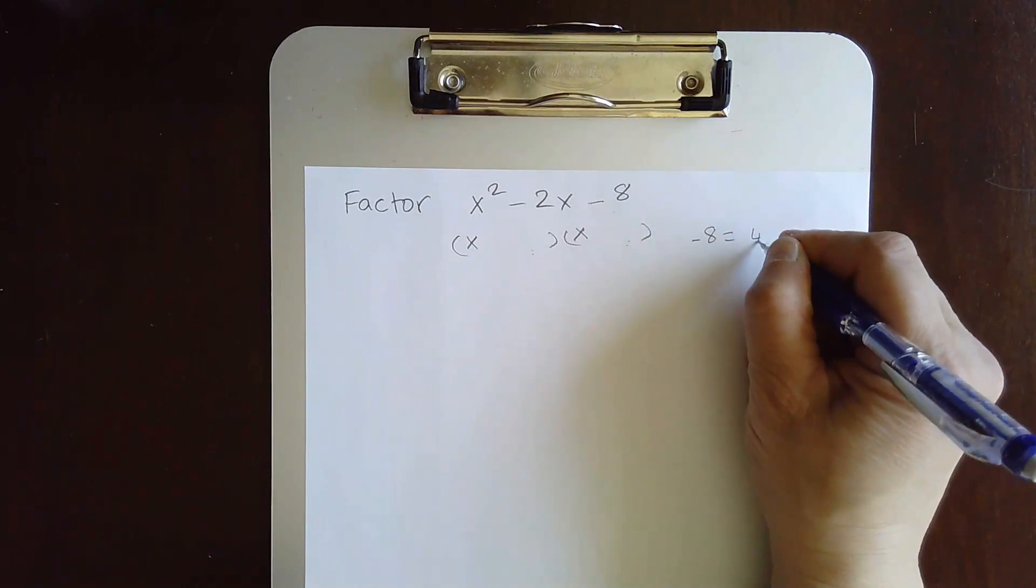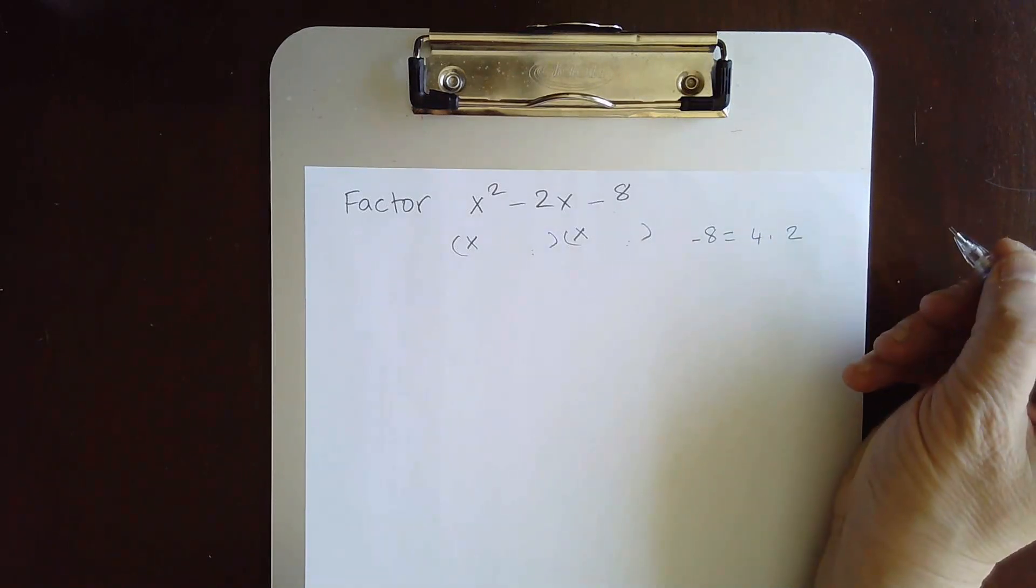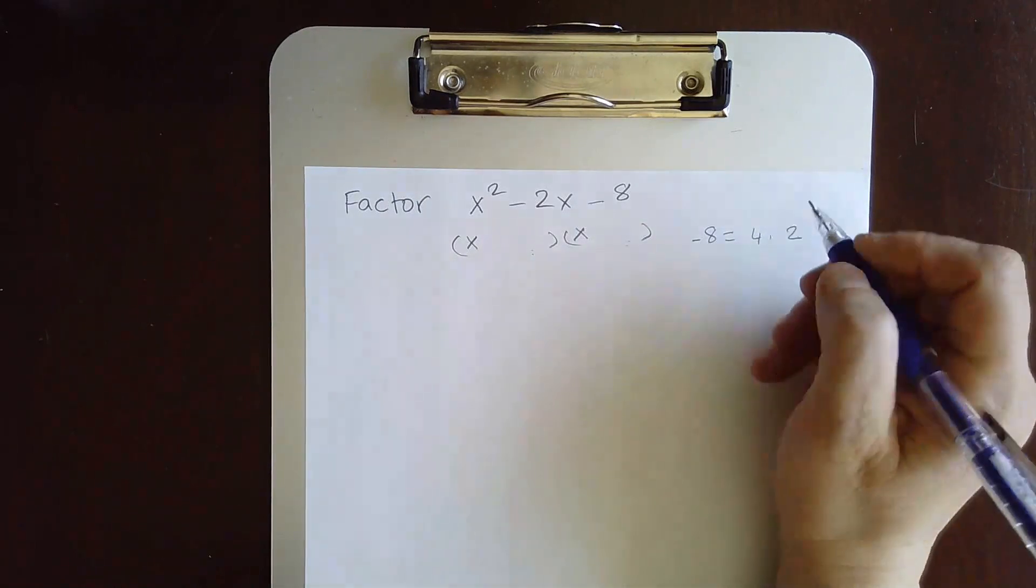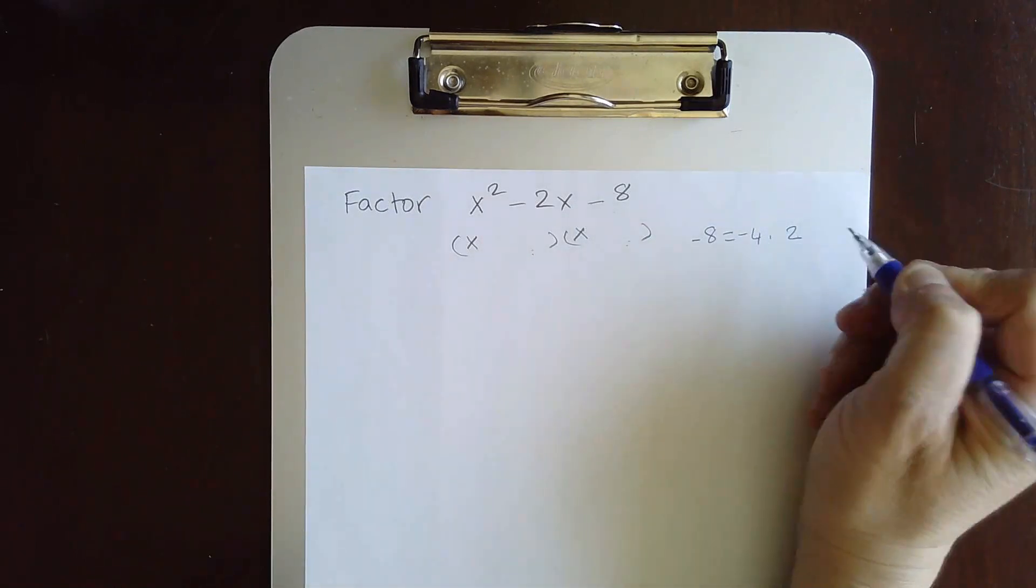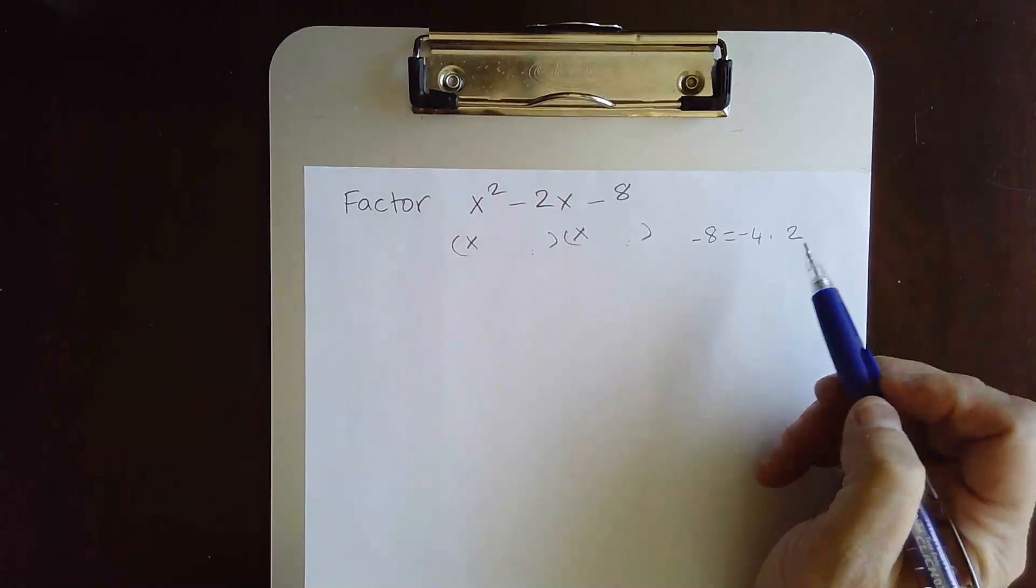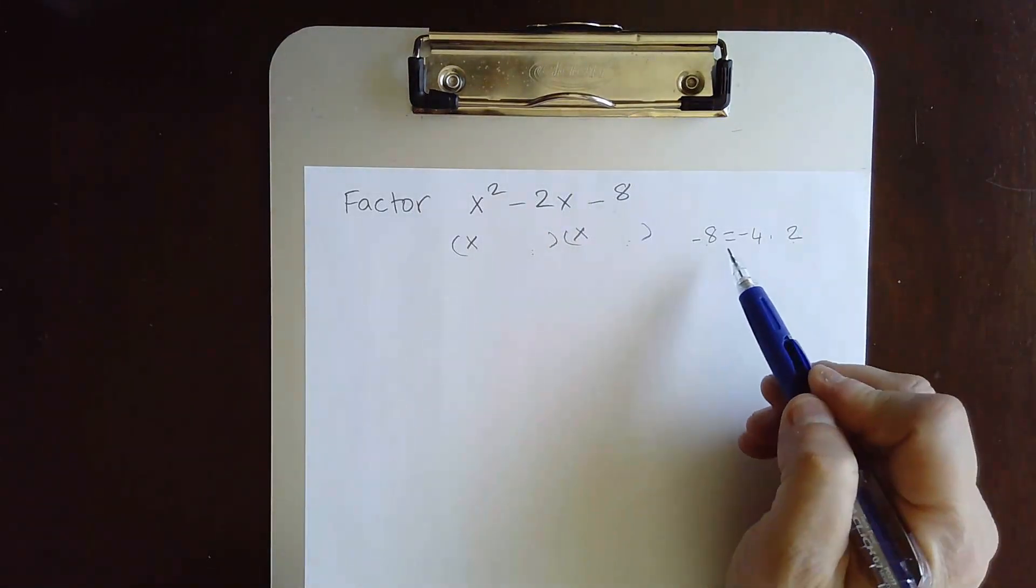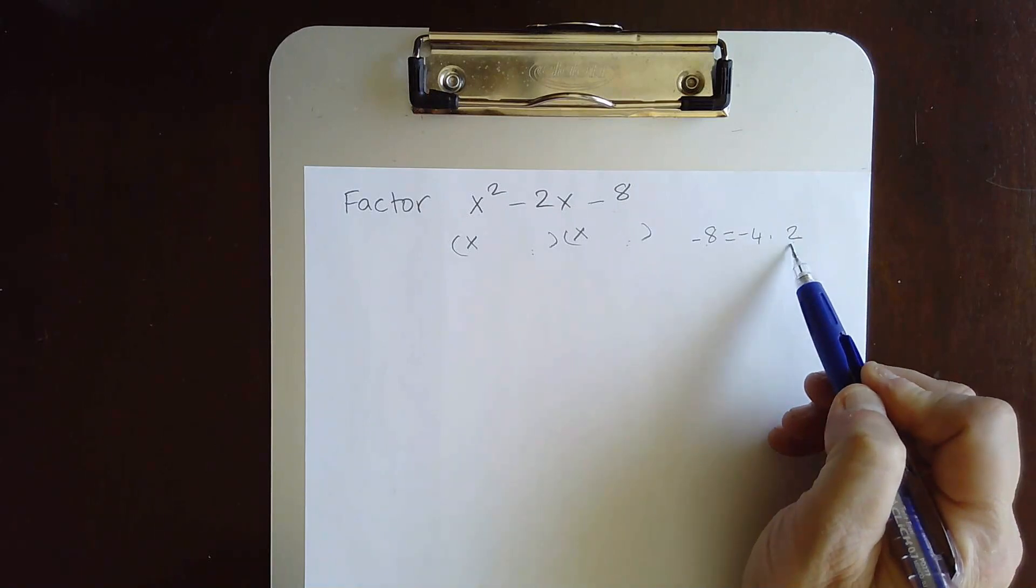You have 4 times 2 gives me 8. So it's either 4 positive or 4 negative. I must have the 4 negative. Why? Because negative 4 times 2 is negative 8. That will give me the product. And negative 4 plus 2 gives me negative 2.